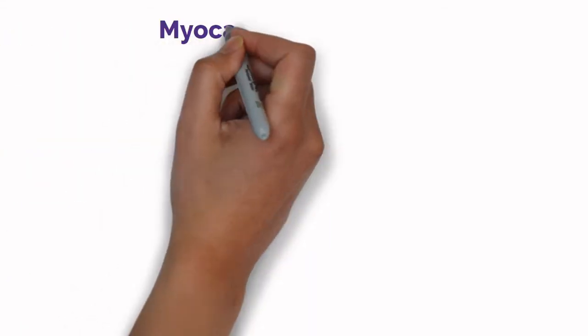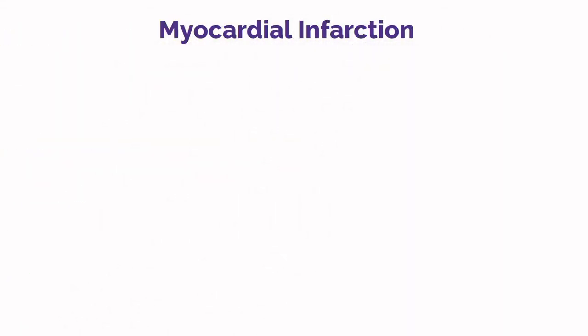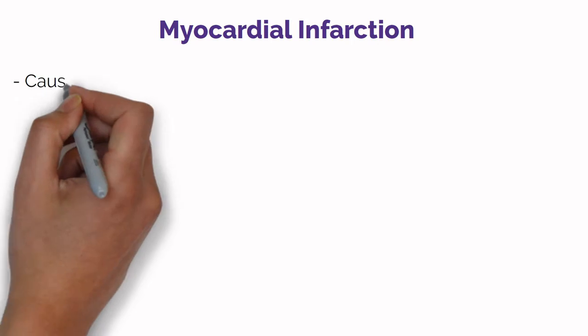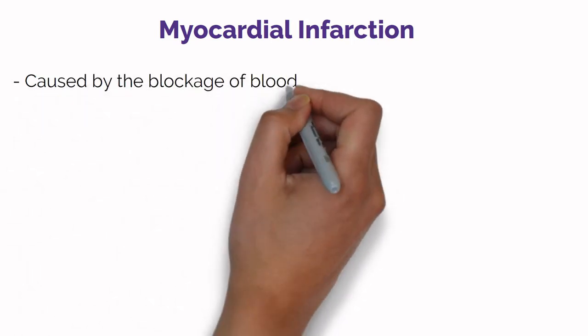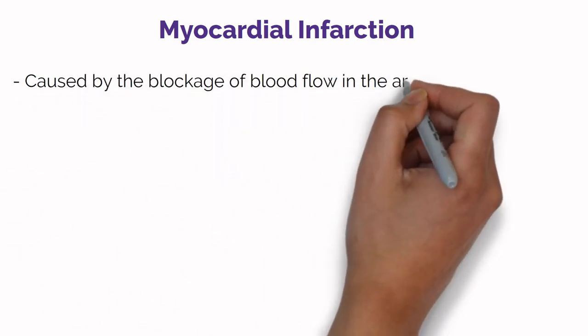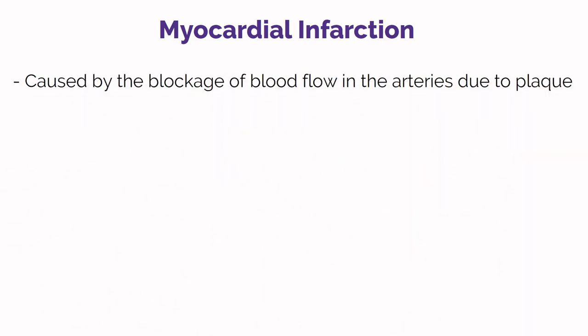As we mentioned in the last video, a myocardial infarction, or heart attack, is caused by the blockage of blood flow in the arteries. This happens when plaque accumulates in the arteries to the point where they become fully clogged and blood simply cannot pass through them.